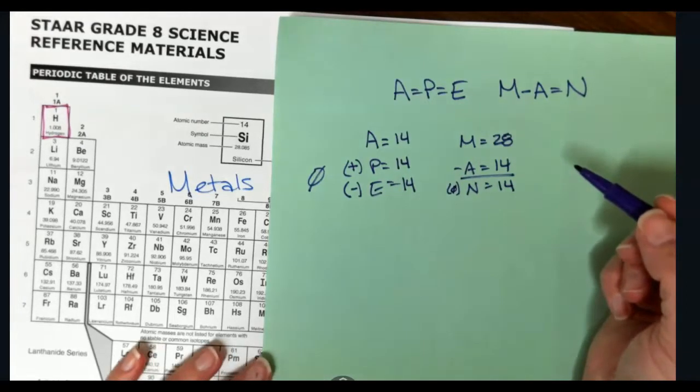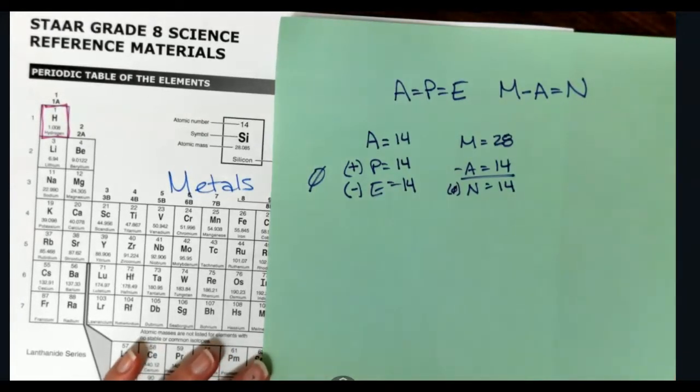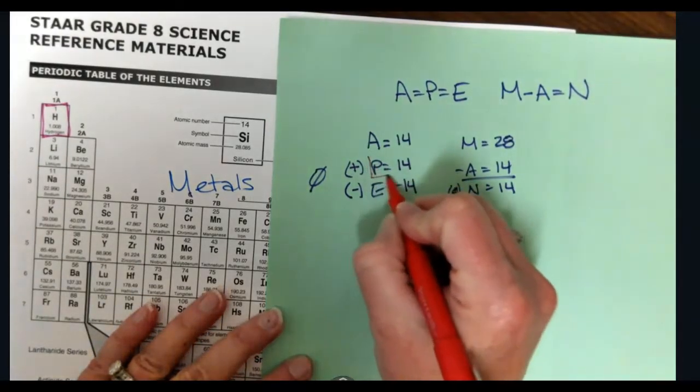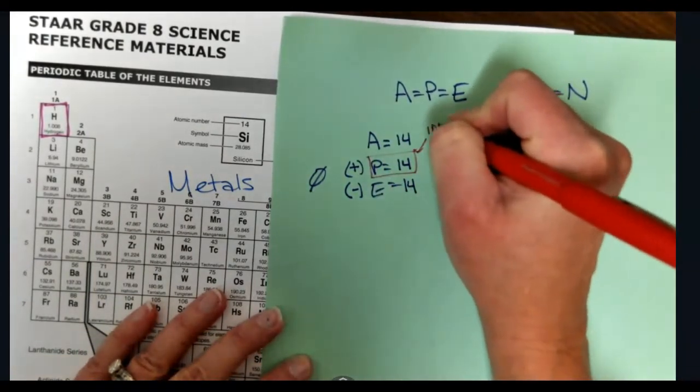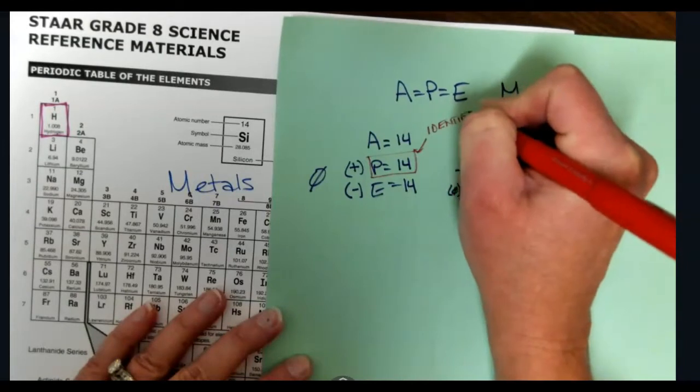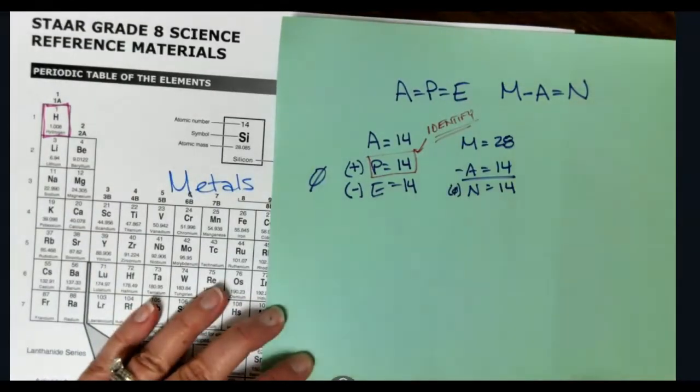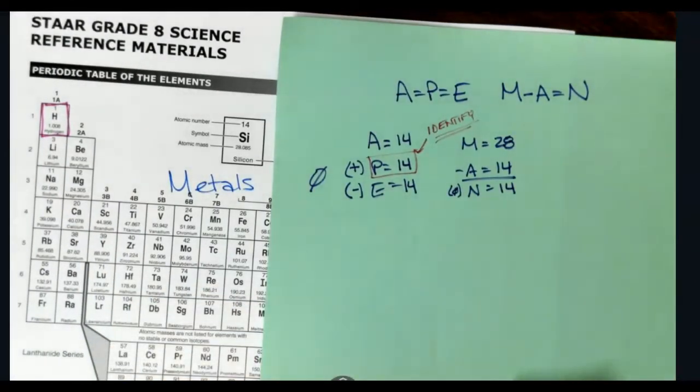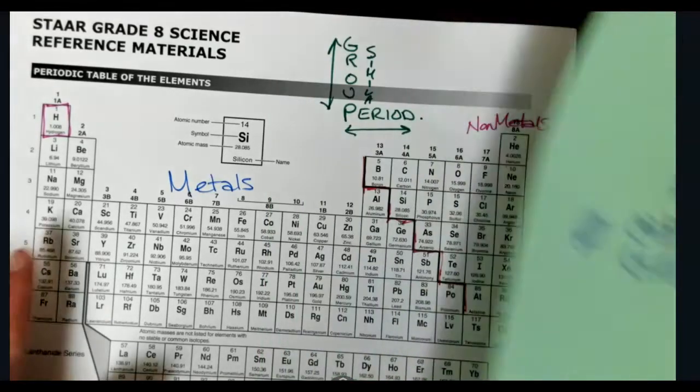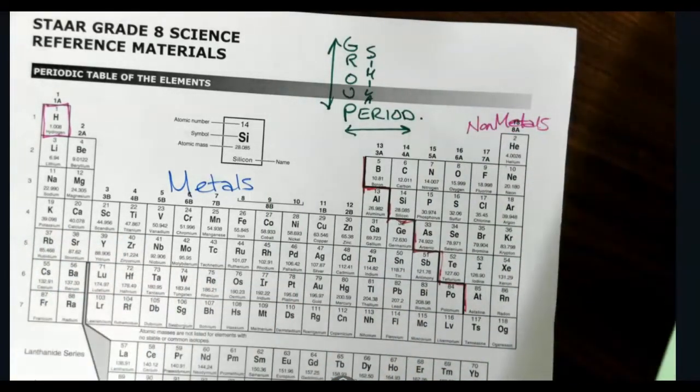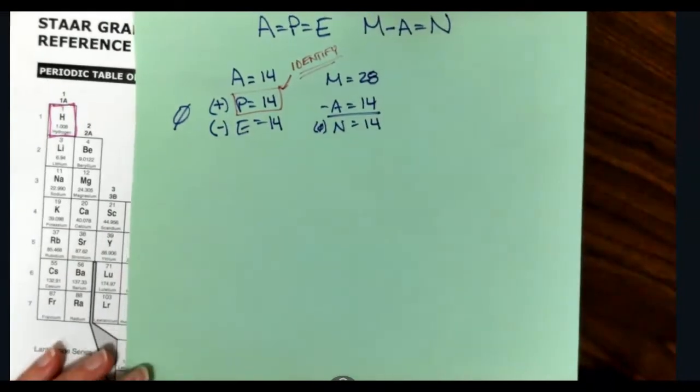Now remember, when we're talking about protons, protons are how we identify. So if you see the word identify, we're looking for the number of protons. It's the only value that is unique to every atom. No two elements are going to have the same number of protons because if you look at the periodic table, no two elements have the same atomic number.